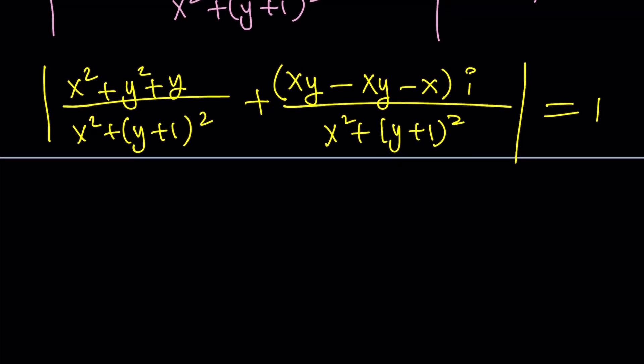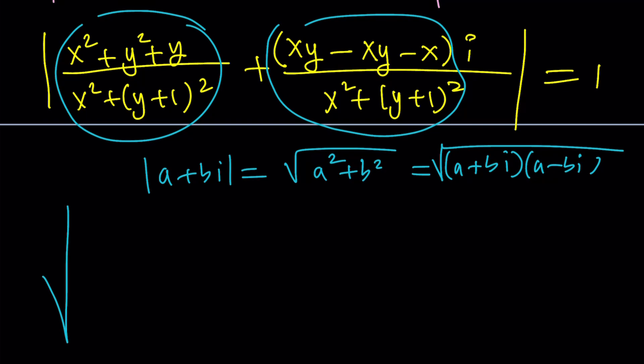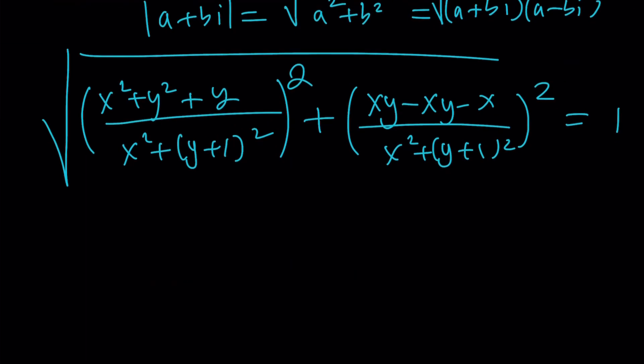How do you find the absolute value? You take the real part, let's call this a, and let's call this b. That's going to be a plus bi. The absolute value of a plus bi is the square root of a squared plus b squared. This is a plus bi times a minus bi inside the radical. So this is going to be the square root of something big. Then we're going to square this, add them up and square root it, and that's going to equal one.